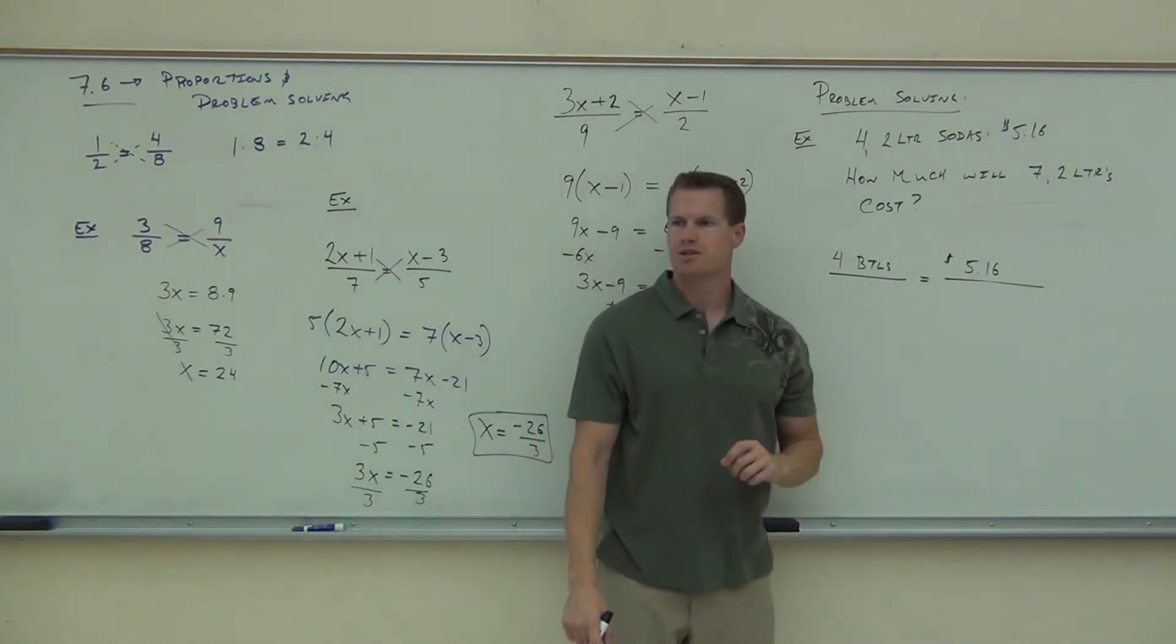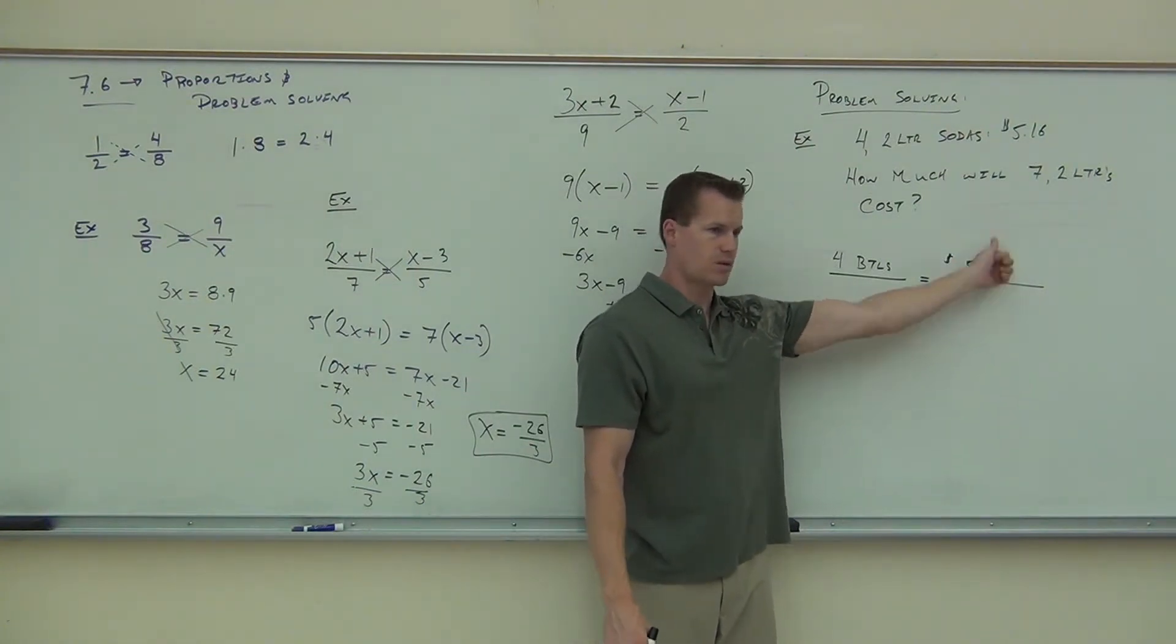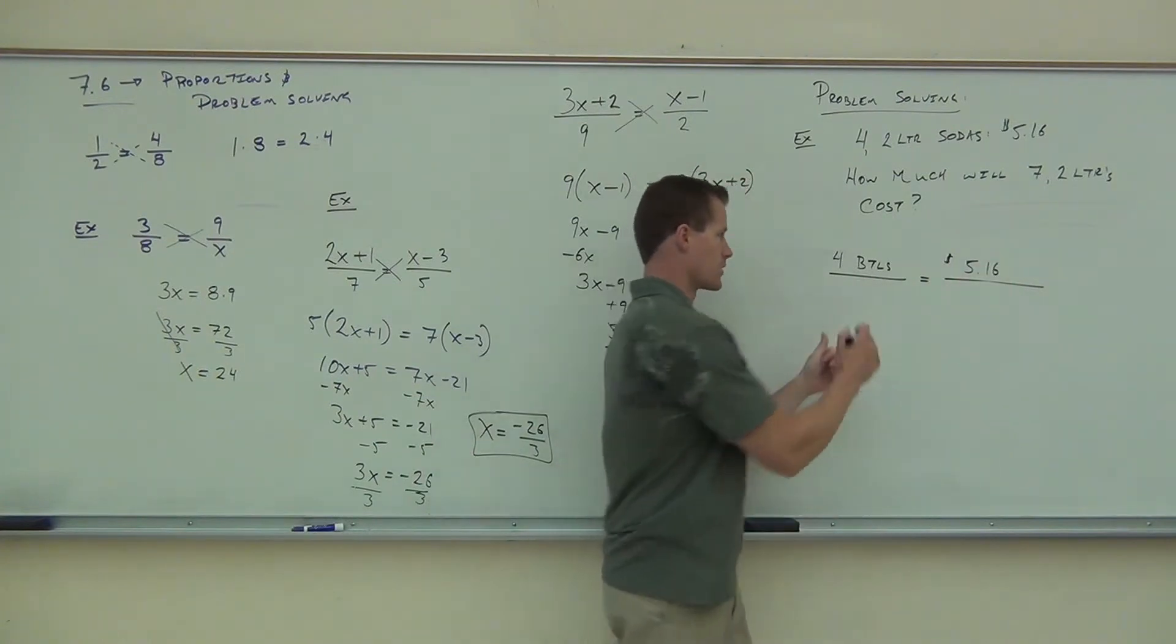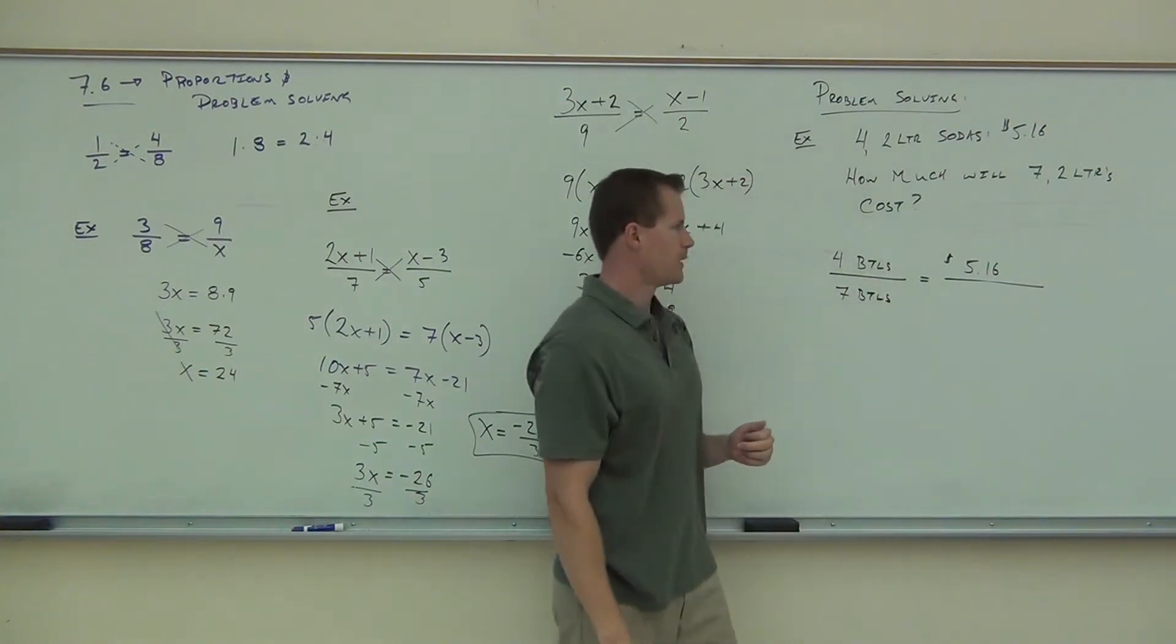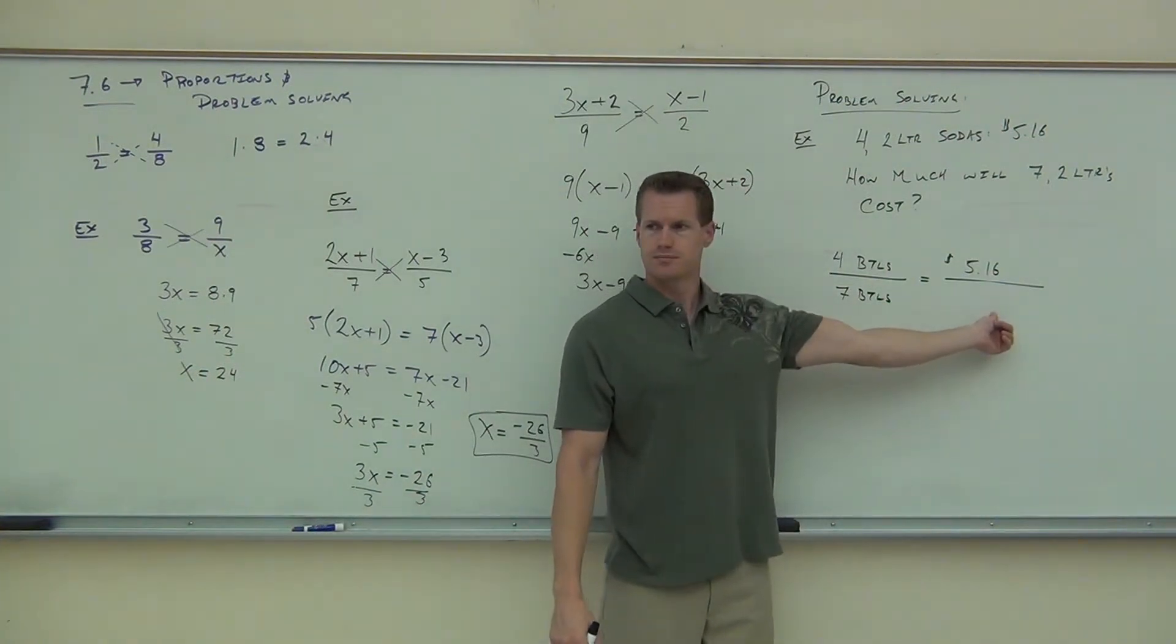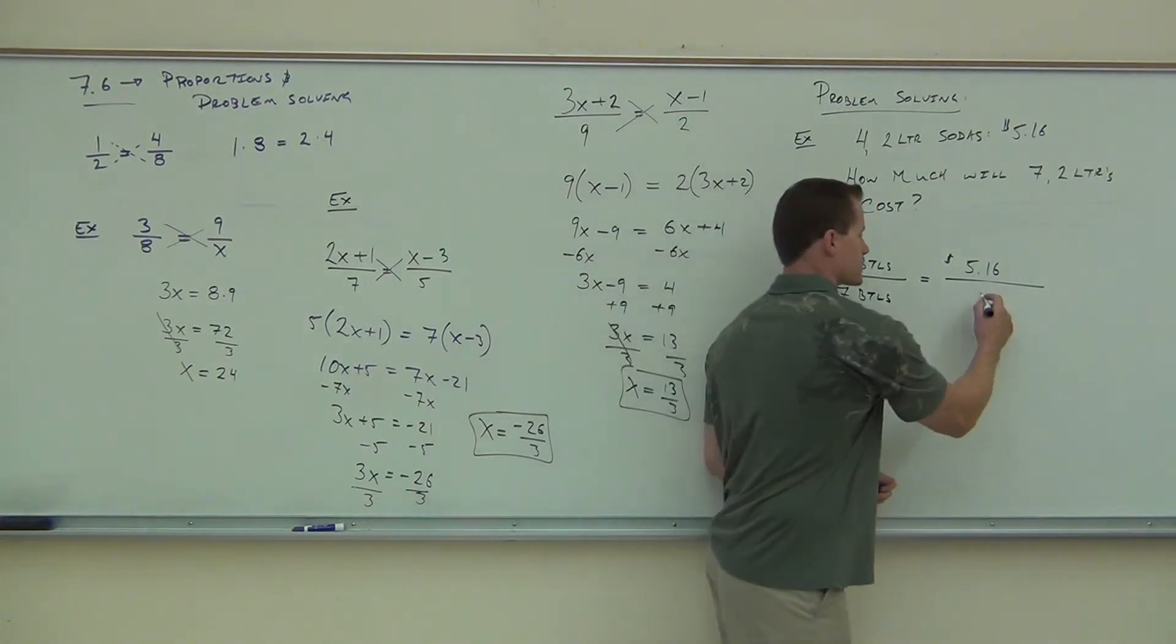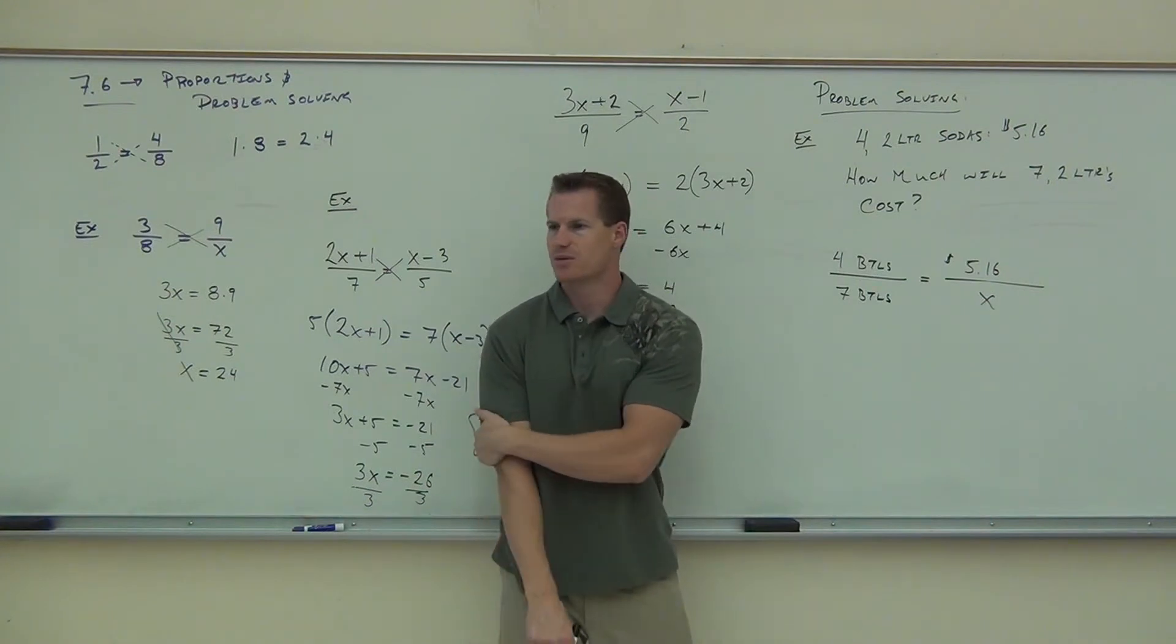Now, you tell me, where does the seven bottles go? Can the seven bottles go over here? No, it can't, because this is not a bottles fraction, right? This is a dollars fraction. Seven bottles would have to go here. What's going to go here? Do we know how much seven bottles equals in cost? That's why the X goes there. Hey, look at that. What is that thing that we just set up?